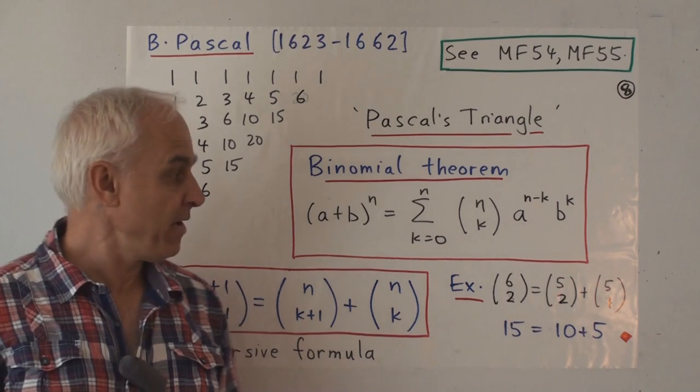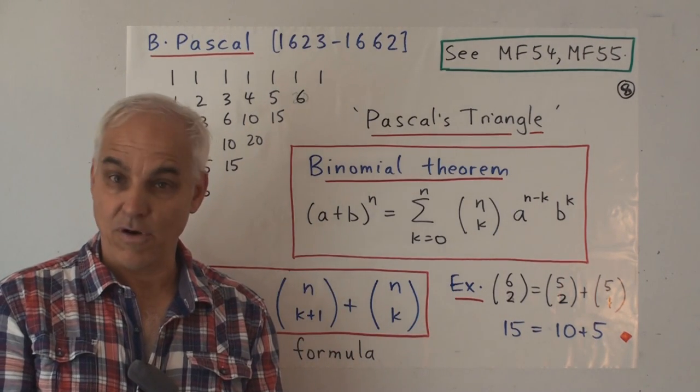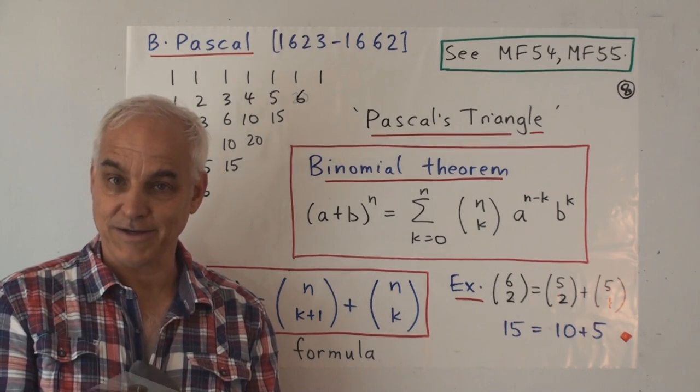So there's our modern compact way of writing the result of Omar Khayyam. It's the binomial theorem. Absolutely fundamental building block for algebra and indeed much of modern mathematics.